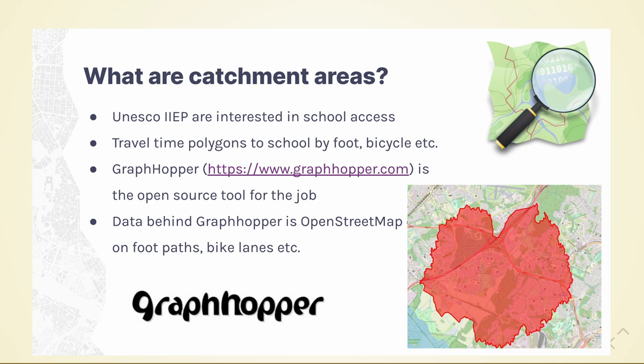Luckily there's an open source tool that we can use for the job, which is called GraphHopper, and I strongly recommend you check it out. It basically uses OpenStreetMap data, so you can download OpenStreetMap data from anywhere in the world. In many parts of the world you also have the footpaths and the bike lanes available, so you can calculate routes on the graph and easily find which areas you can access within, say, 15 minutes.